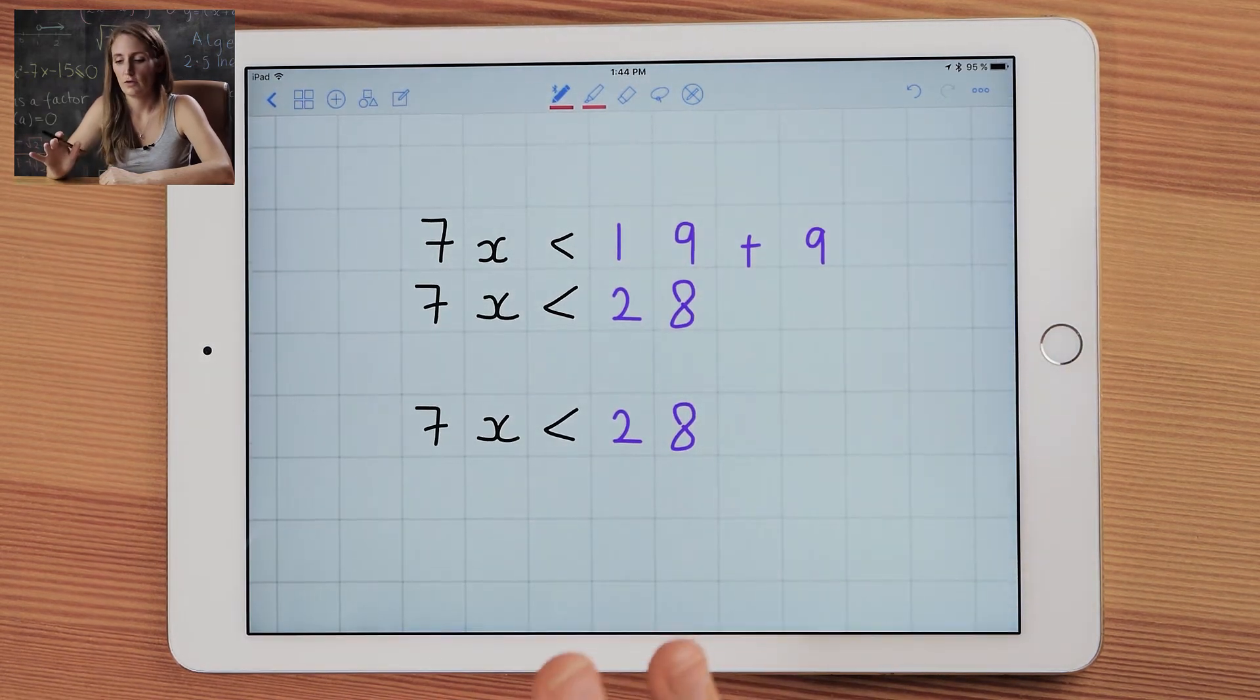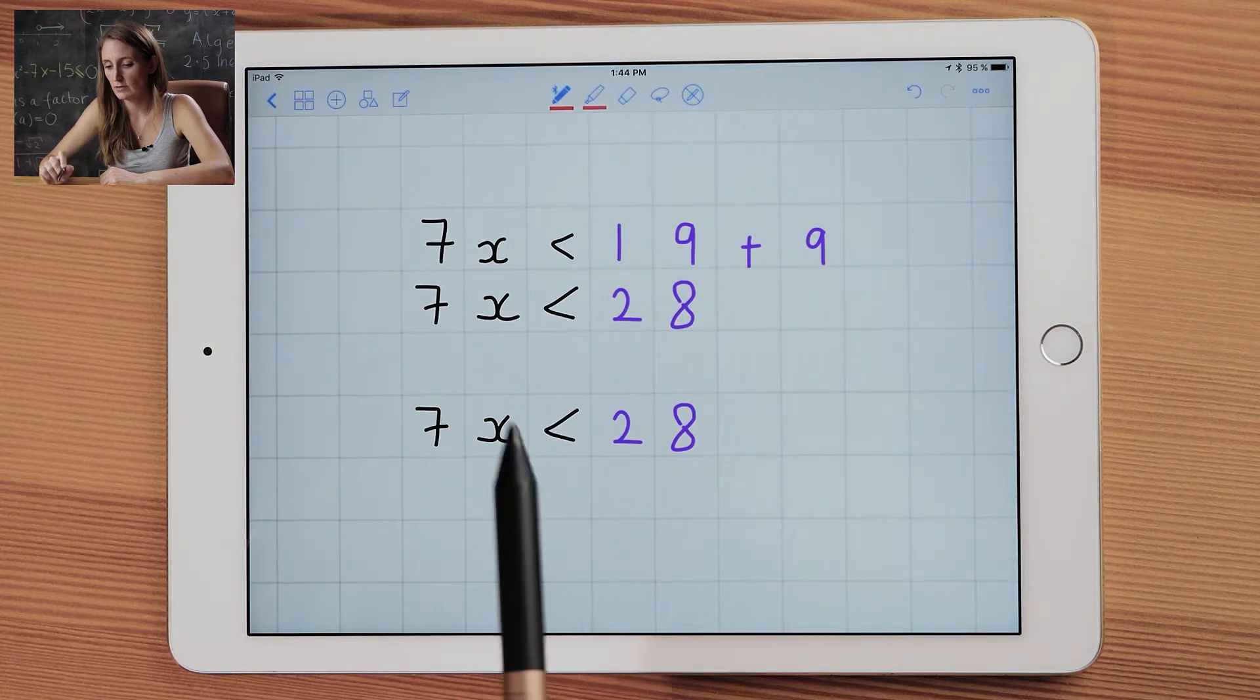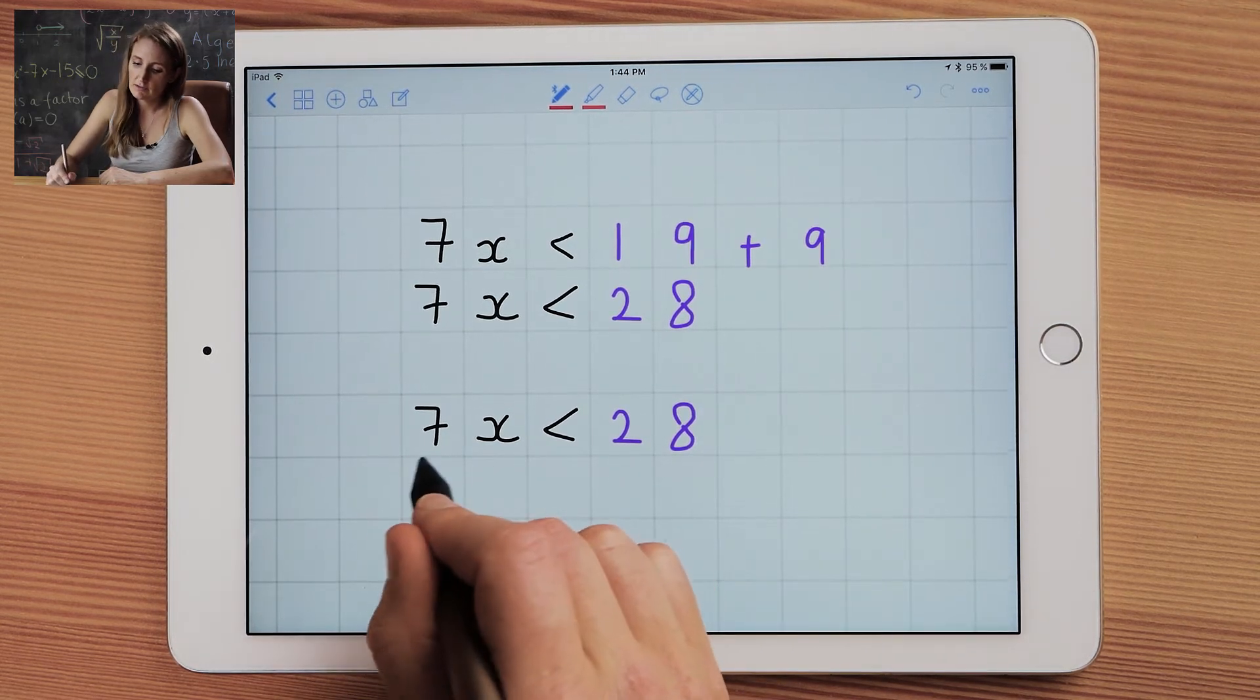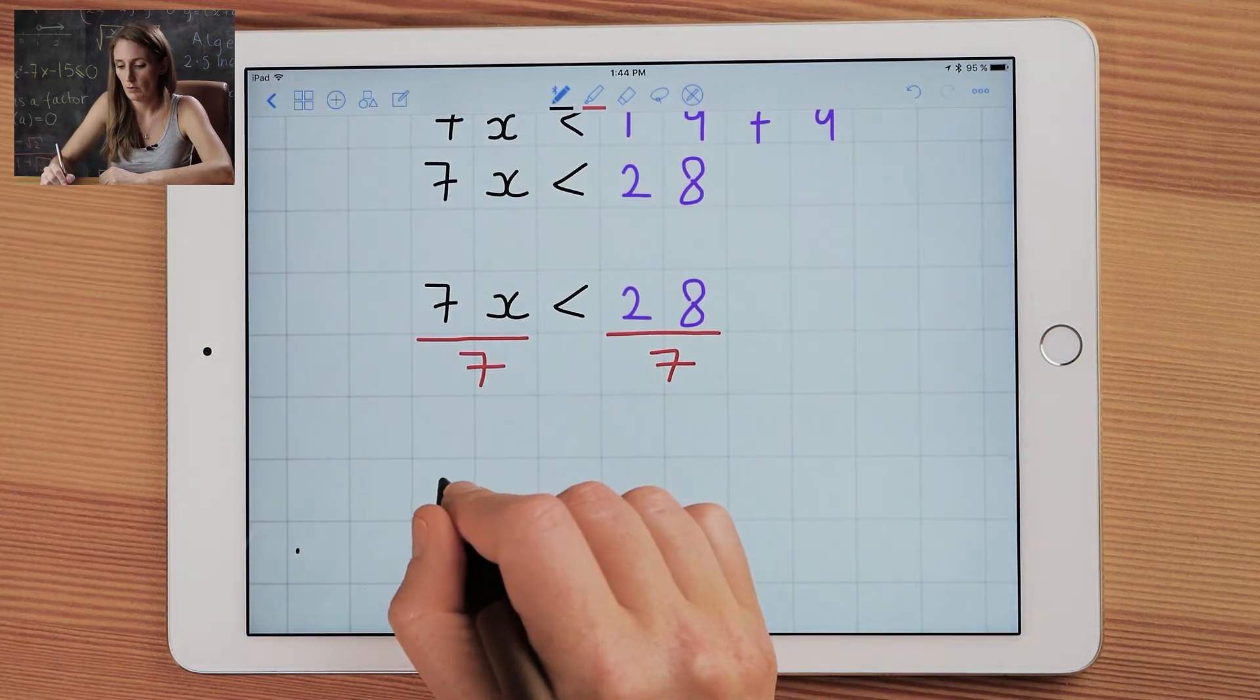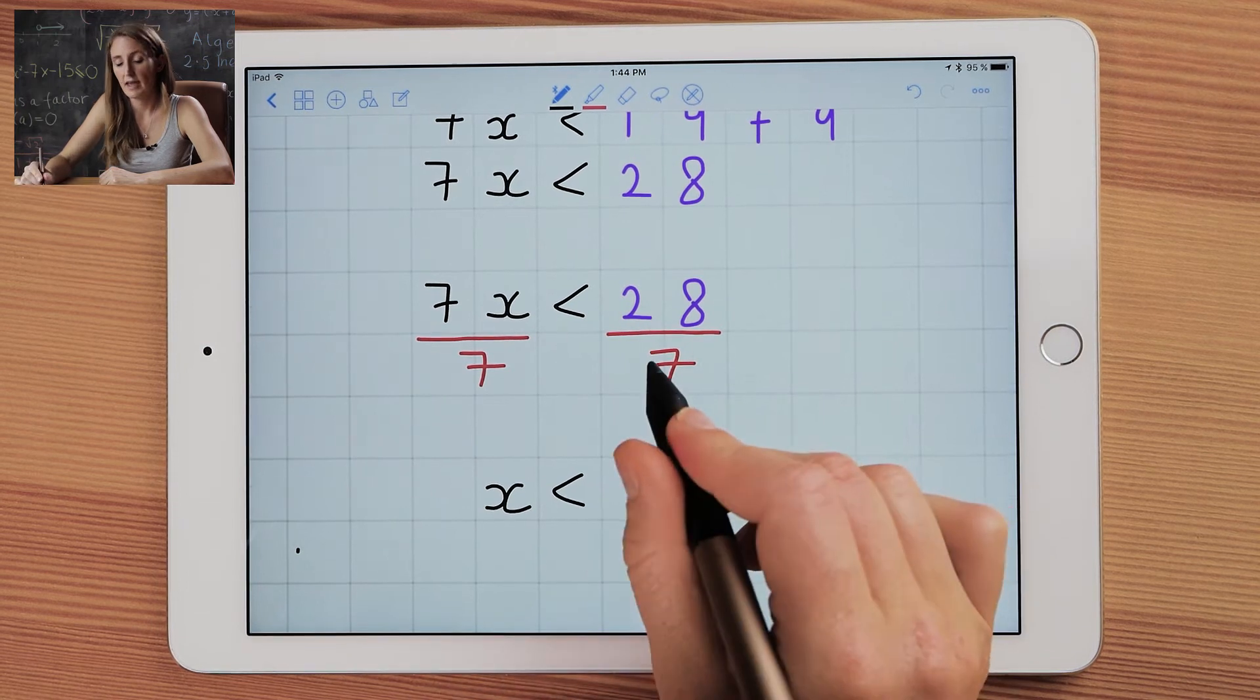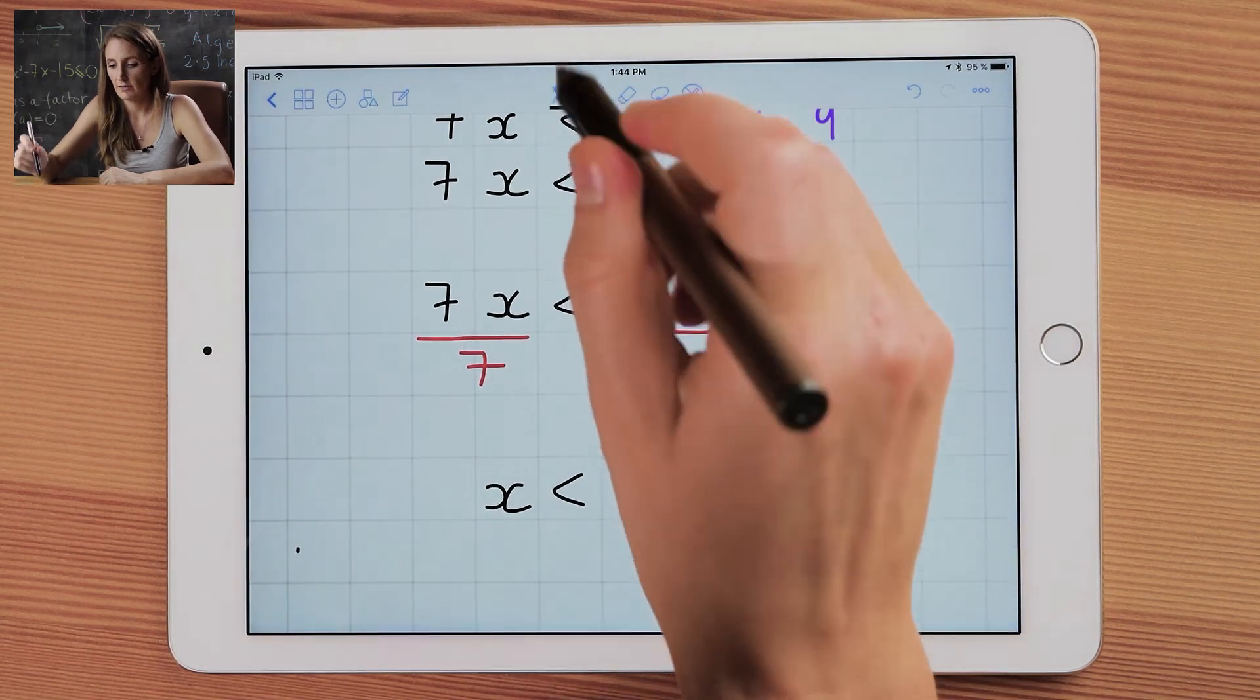Once you've added together all of your like terms you need to look at what's in front of the x. So we've got a 7 in front of the x. We need to solve for x which means we can only have one x. So to do that we need to divide both sides by 7. 7 divided by 7 is 1 or 1x, and 28 divided by 7 is 4. So that's going to be your final answer.